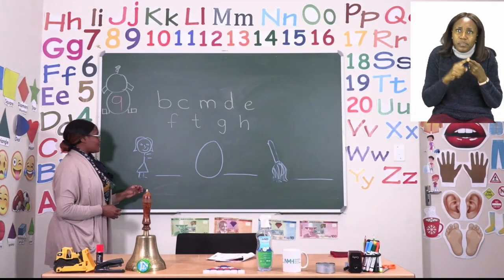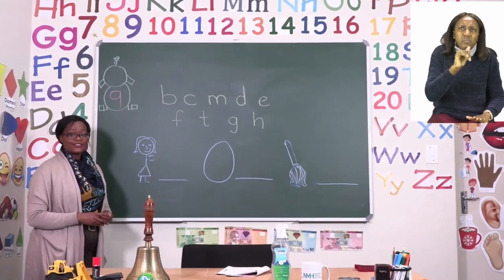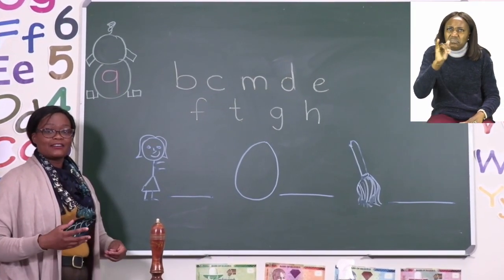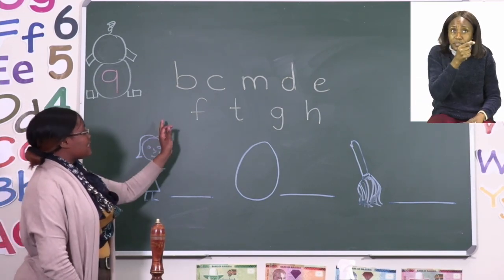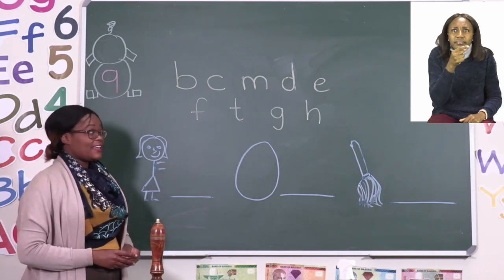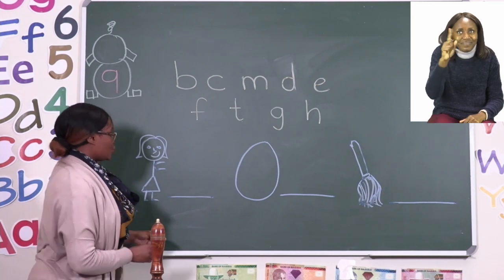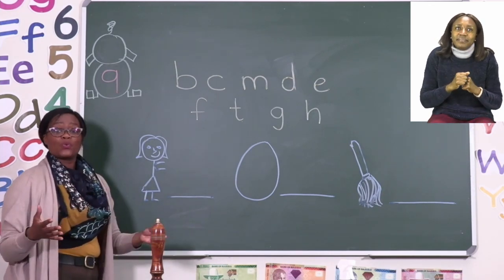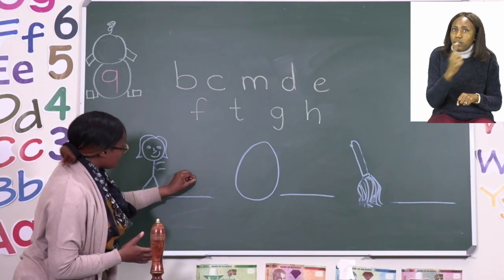The first one that we have is a girl. Now the girl starts with a G. Girl. So which of these letters is a G? If you said that this is the G, well done. So we are not going to write the word girl, just the beginning sound, which is the G.